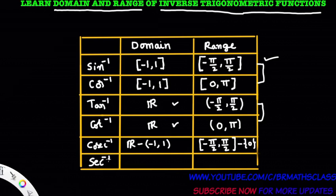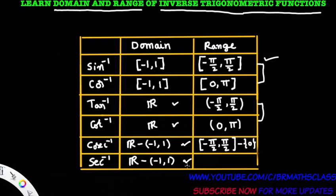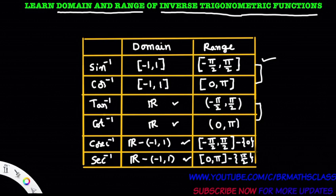Now we will see domain and range of secant inverse. The domain of secant inverse x is all real numbers except the open interval minus 1 comma 1, same as the domain of cosecant inverse. The range of secant inverse can be remembered from the range of cosine inverse: the range of cosine inverse is closed interval 0 comma pi, and the range of secant inverse is closed interval 0 comma pi minus the singleton set containing pi by 2.